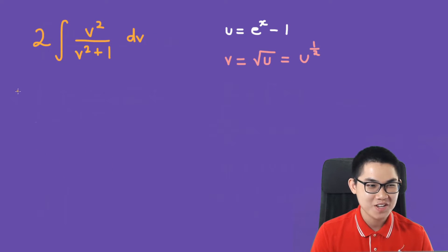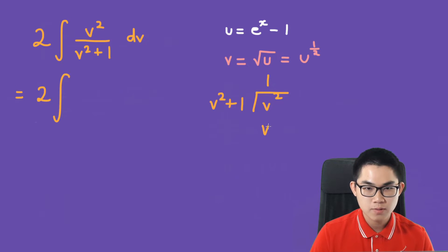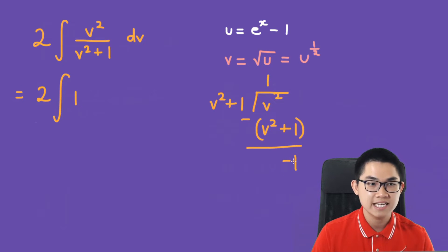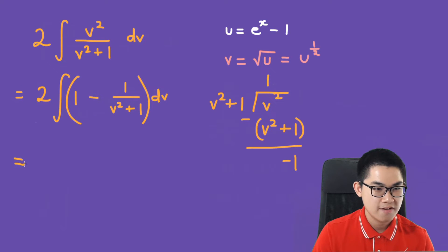To solve this integral, we perform polynomial division on v squared over v squared plus 1. We divide 1 times v squared plus 1 into v squared: the quotient is 1, and the remainder is negative 1. So v squared over v squared plus 1 equals 1 minus 1 over v squared plus 1. The integral becomes 2 times the integral of 1 minus 1 over v squared plus 1 dv.